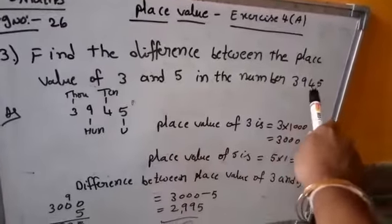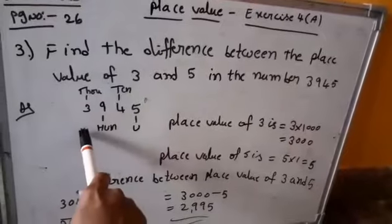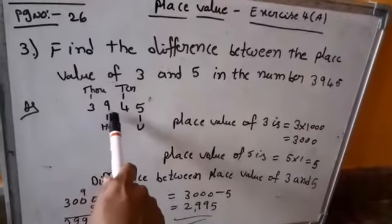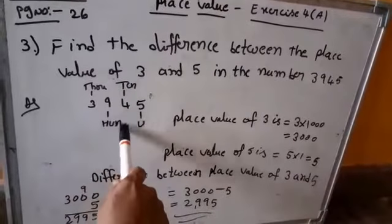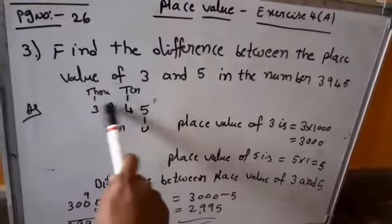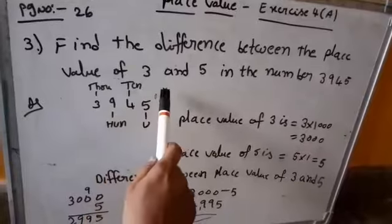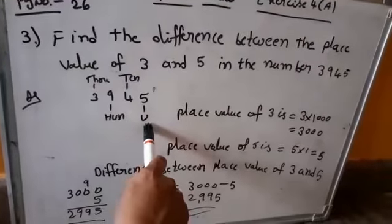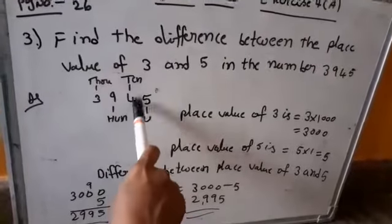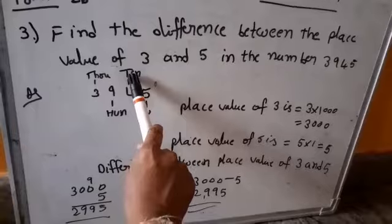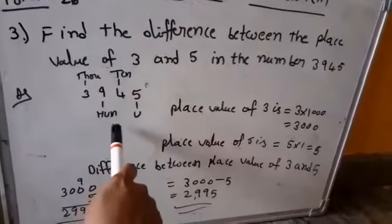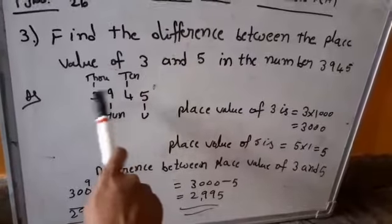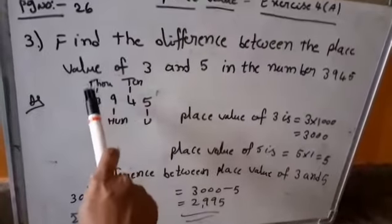3945 is a four-digit number. In this number: 5 is the units place, 4 is the tens place, 9 is the hundreds place, and 3 is the thousands place.